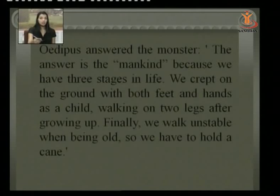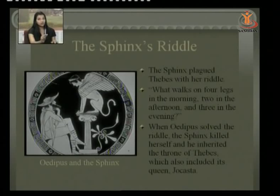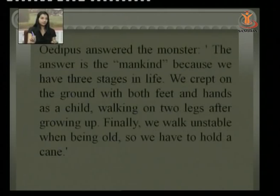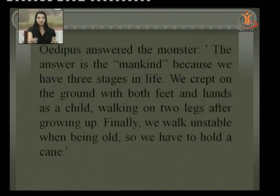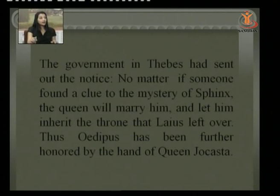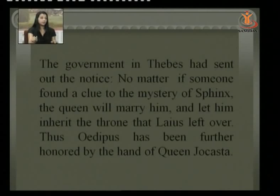The people of Thebes had sent out a notice that whoever found a clue to the mystery of the Sphinx, the queen would marry him and let him inherit the throne that Laius had left. Laius had been killed by somebody — we will learn who later. Thus Oedipus was further honored by marriage to Queen Jocasta. He didn't know who Jocasta was; he only knew she was queen of Thebes.